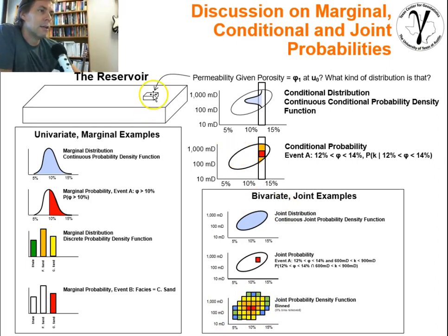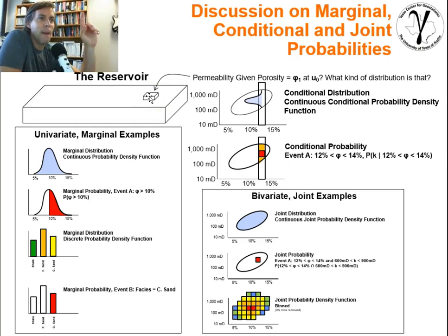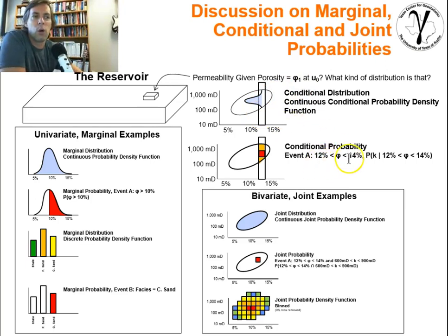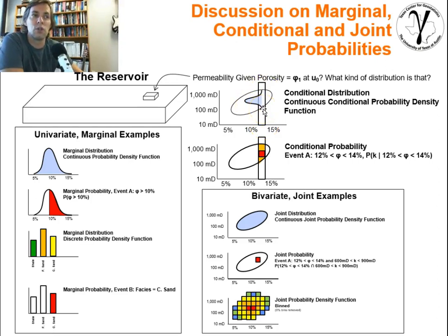In the conditional case, at this location we've managed to gather one piece of information — porosity — but not the permeability. So the question is: what's the permeability given that we have a porosity of a certain value or range? We could look at the entire conditional distribution — identifying porosity between 12% and 14%, and calculating the entire distribution of permeabilities for all samples within that porosity range. For the continuous case, we draw it as a simple distribution within the range of values, and it fits within the overall joint distribution.